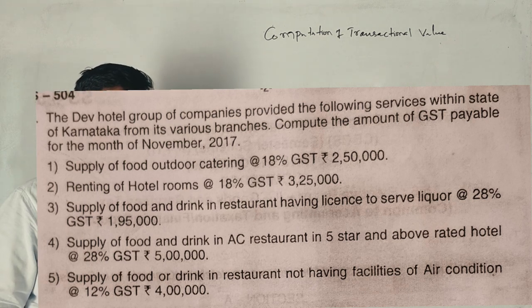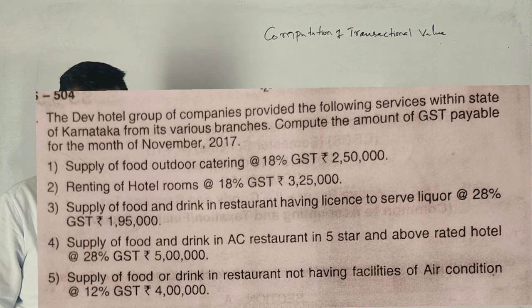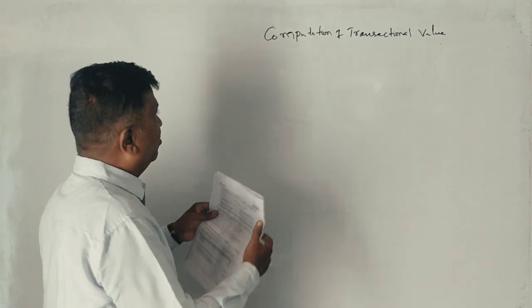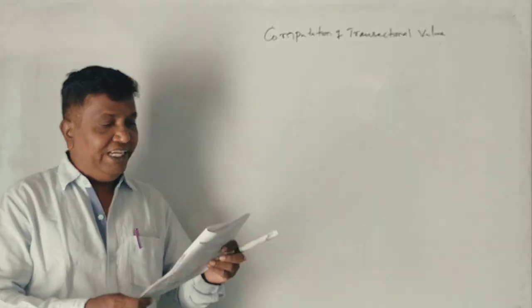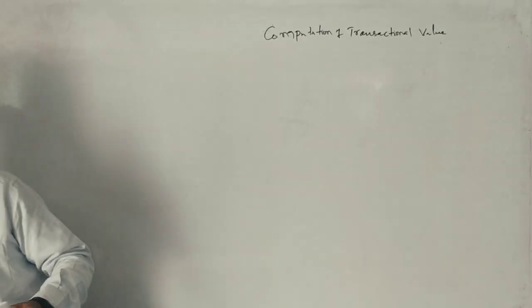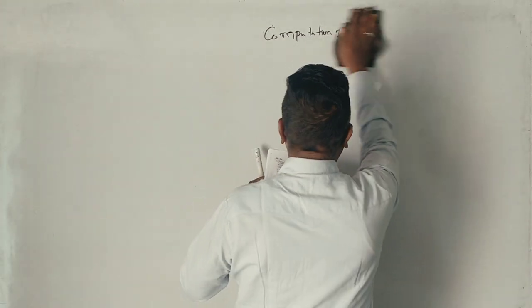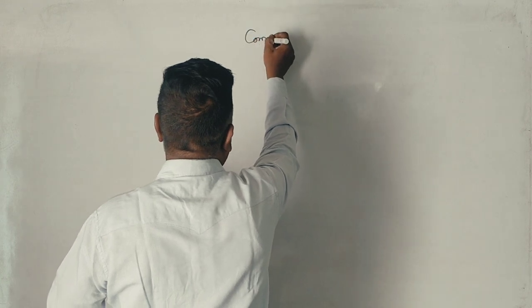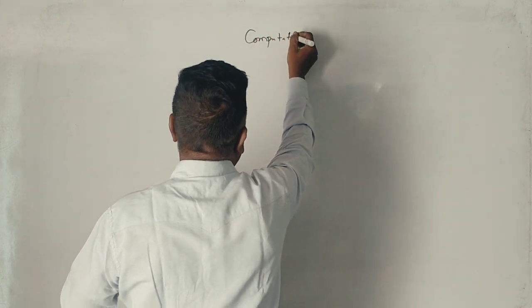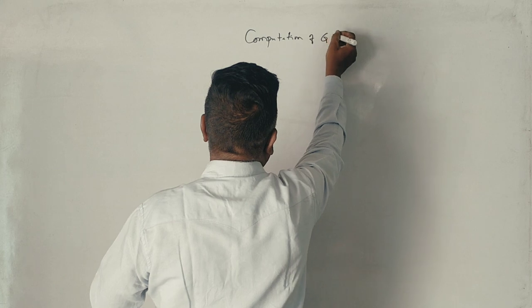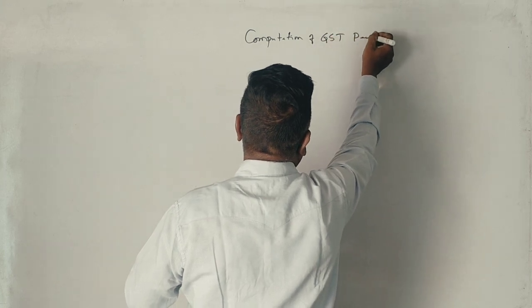Supply of food, outdoor catering, 18% GST - it is a taxable service. See, first of all, computation of GST payable. GST payable for the month of 2017. So, computation of GST payable.